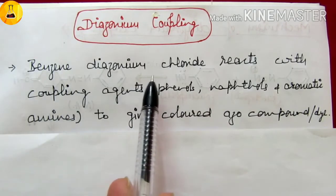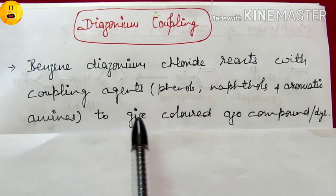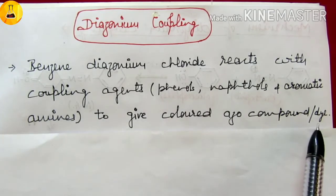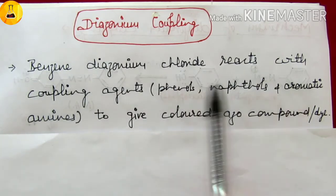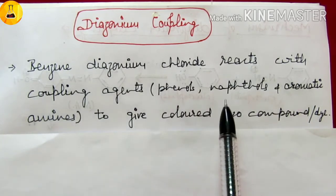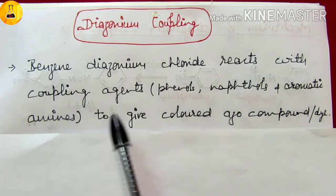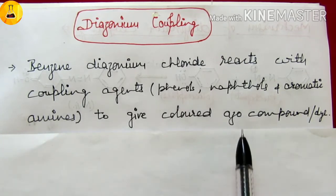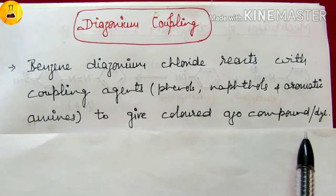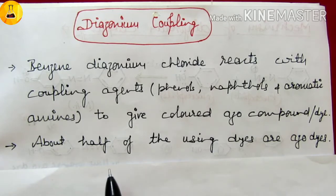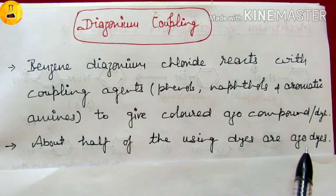Benzene Diazonium Chloride reacts with coupling agents to give colored azo compounds or dye. Coupling agents include phenols, naphthols, or aromatic amines. We get colored compounds called azo dyes. About half of the dyes in use are azo dyes — our colors are only azo derivatives.